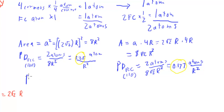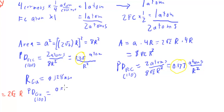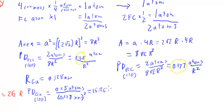For example, copper has a radius of 0.128 nanometers. The planar density of copper along the 100 plane equals 0.25 atoms divided by (0.128 nm)², which gives approximately 15.26 atoms per square nanometer.